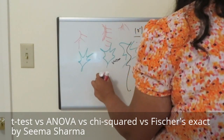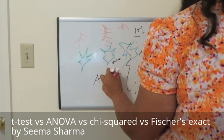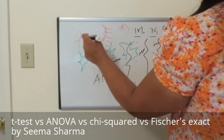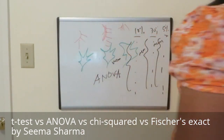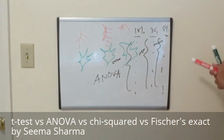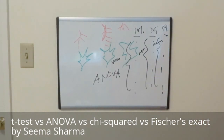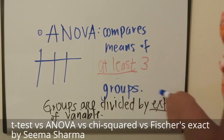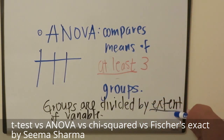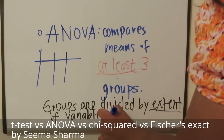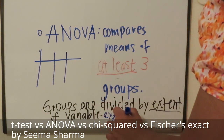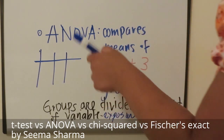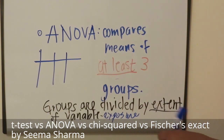That is called a single-factor ANOVA, because you're only changing the levels of one factor, which is sunlight exposure, between the three groups. An ANOVA compares the means of at least three different groups. The groups are divided by extent of variable exposure — for example, those leaves were divided into groups by 10%, 30%, and 50% exposure.